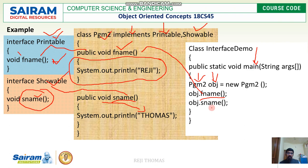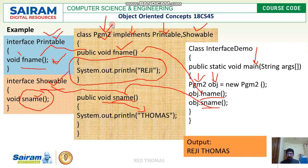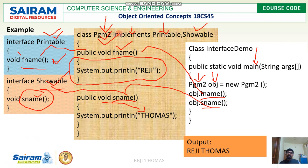I use the same object to call sname and print the second name. Remember, these two methods belong to two different interfaces: fname belongs to printable, and sname belongs to showable. Both interfaces are implemented in the class pgm2. When I run this, I get the output: regi thomas — regi printed by fname and thomas printed by sname.